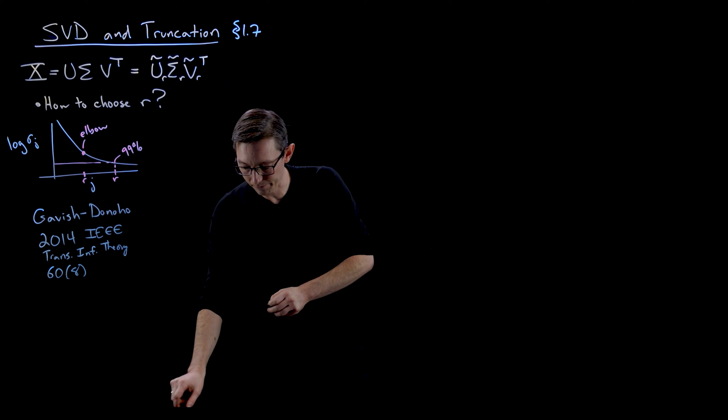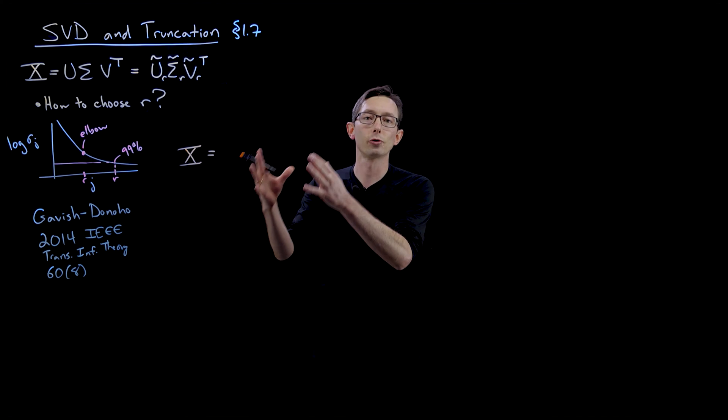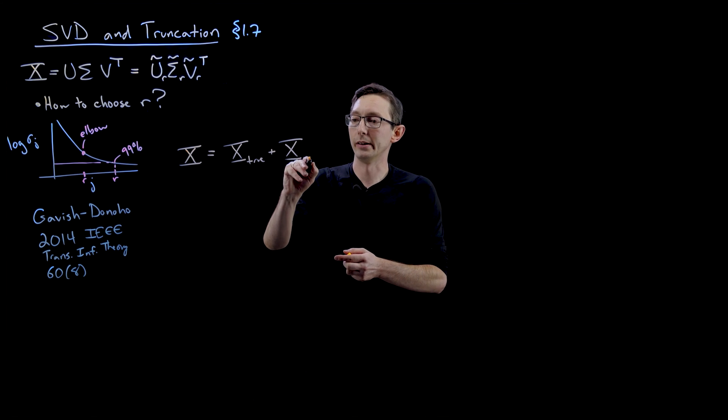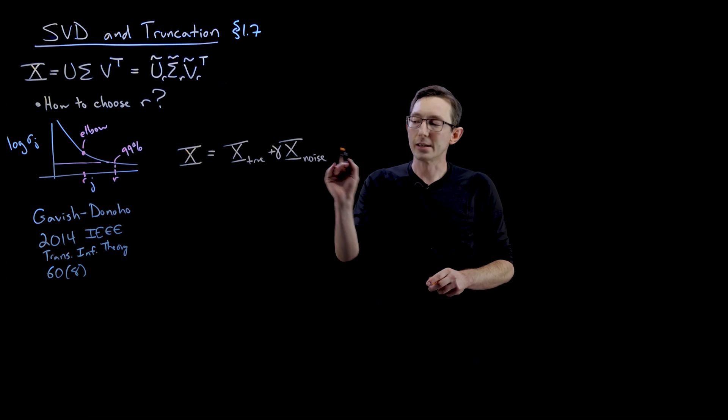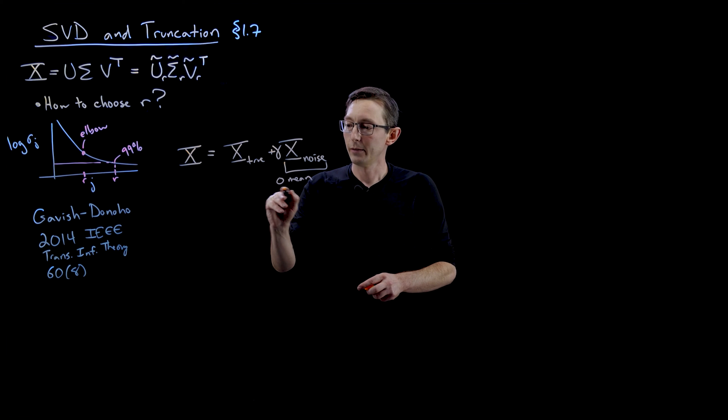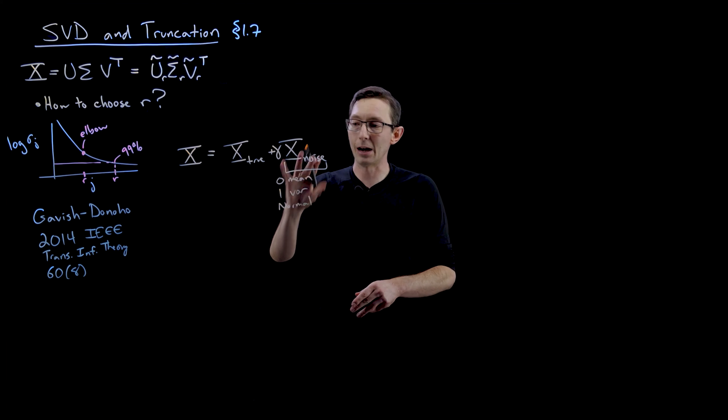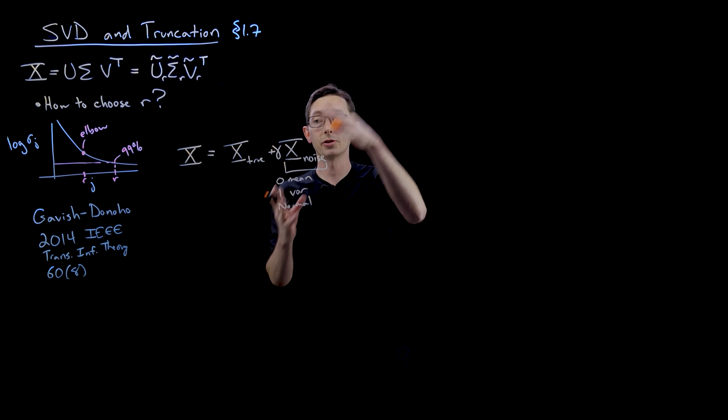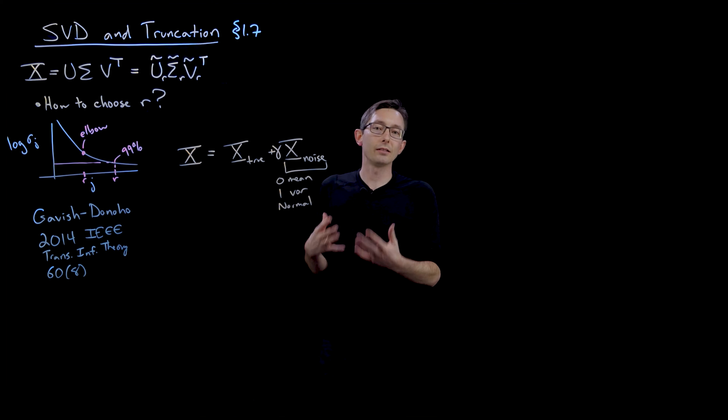And their entire premise is that your data x can be written as the sum of a true low rank data signal, I'm going to call that x true, plus x noise. And more importantly, let's put a little gamma out here. So x noise is going to be assumed to be 0 mean variance 1 normally distributed. So it's Gaussian noise 0 mean unit variance multiplied by this gamma. So it can be large or small depending on the magnitude of this gamma. And so the observation is that for lots and lots of high-dimensional data,